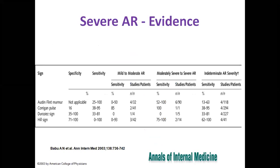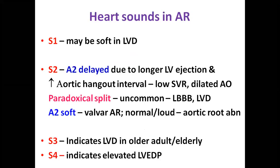In AR, S1 may be soft when LV dysfunction develops. A2 is delayed due to longer LV ejection and also due to increased hangout interval in patients with dilated aorta or lower systemic vascular resistance. Paradoxical split is uncommon but may occur with LBBB or LV dysfunction. A2 may be soft in native valve AR whereas normal or loud in aortic root abnormalities. In contrast to MR, S3 in AR indicates LV dysfunction especially in older adults. S4 can be present with LV dysfunction. To differentiate AR due to valve pathology from aortic root pathology: root dilatation gives dullness in the right upper sternal border, loud A2 with tambour quality as in syphilitic AR, and the murmur is better heard on the right sternal border — Harvey's sign.